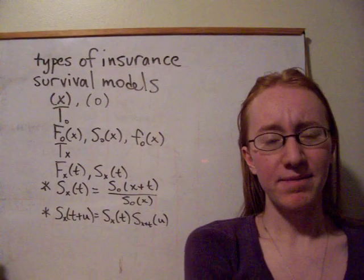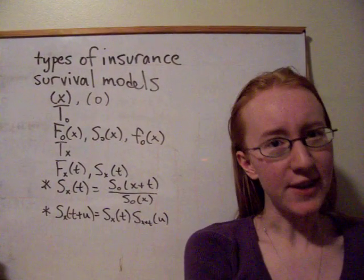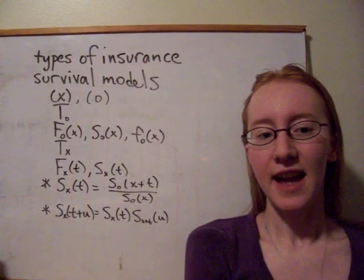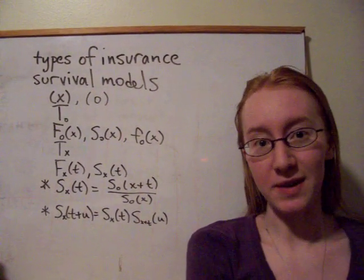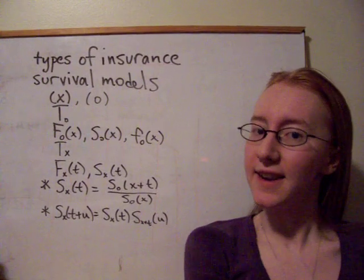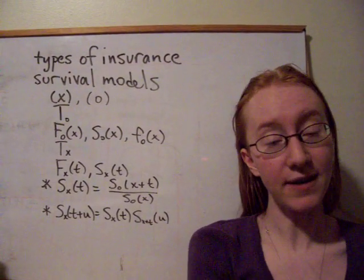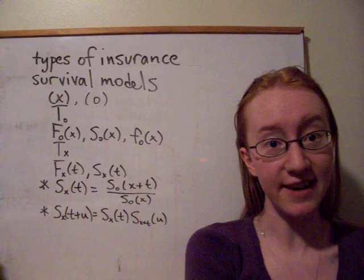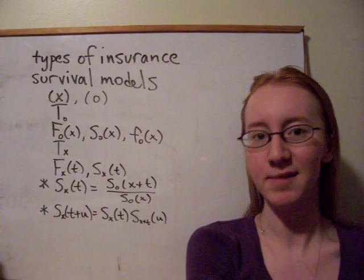Of course, newborn people don't often buy insurance, so we need to worry more about a life who's already attained a certain age, and the remainder of that life is going to be a random variable. And we call that Tx. So if someone is already age x, Tx is the remainder of their lifetime. So their entire age at death would be x plus Tx.